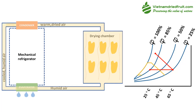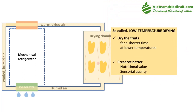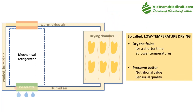The air is then warmed up again and now it has much lower relative humidity, which means it becomes much drier. It is blown back into the drying chamber to take moisture from the food faster. This advanced technology is called low temperature drying, and the whole drying process is also shorter because drier air withdraws moisture from the food faster.